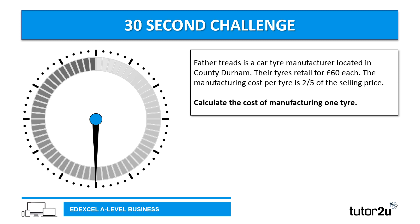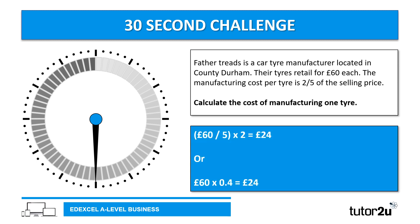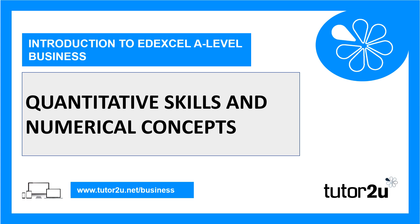The cost of manufacturing one tyre is £24. Two ways to do it: £60 divided by 5, times 2, to work out two-fifths — which is £24. Alternatively, recognising that two-fifths is 40%, so £60 times 0.4 gives £24. That concludes this video and the final video in our introduction to Edexcel A-level business online course, where we've looked at quantitative skills and numerical concepts.